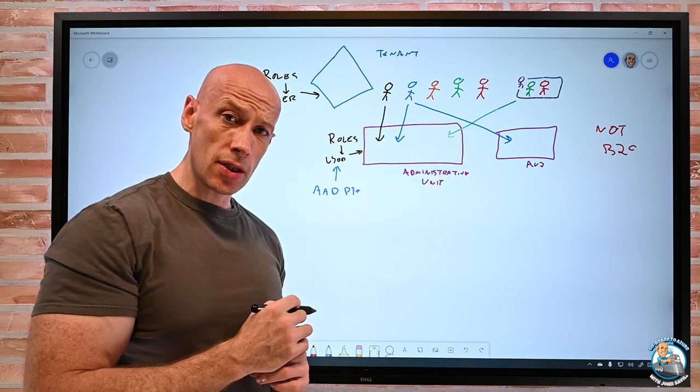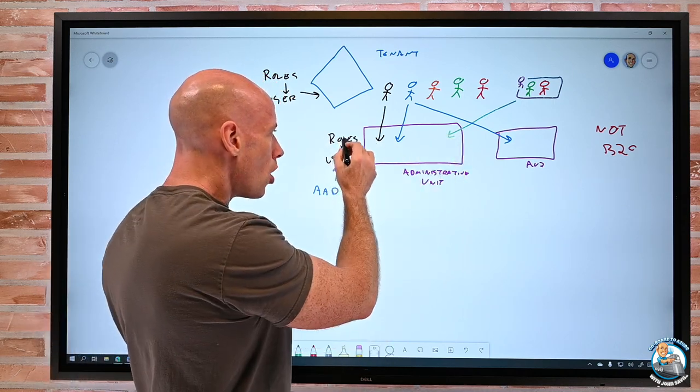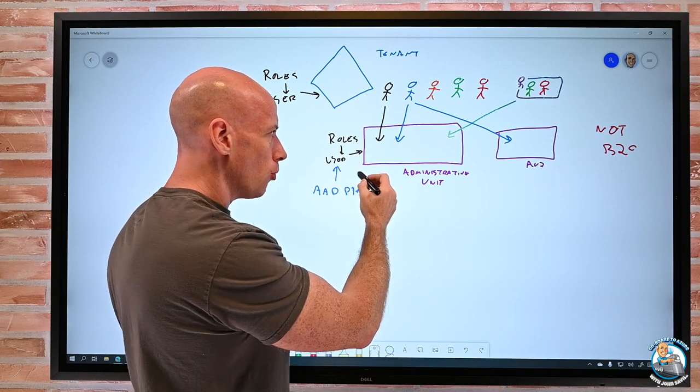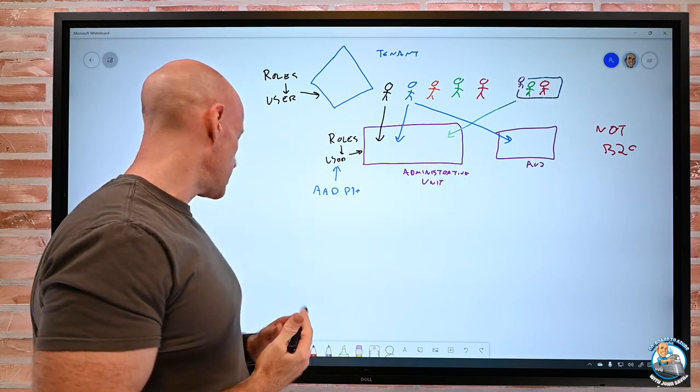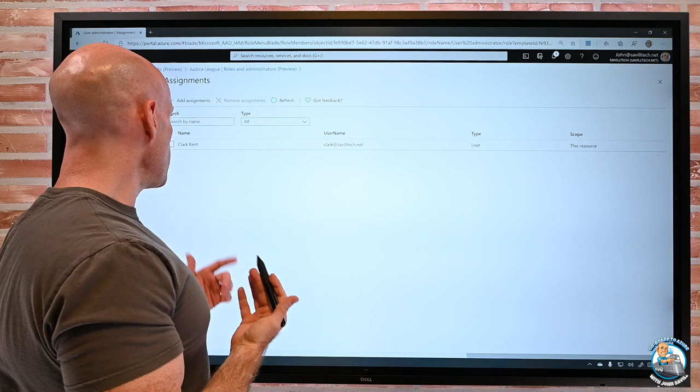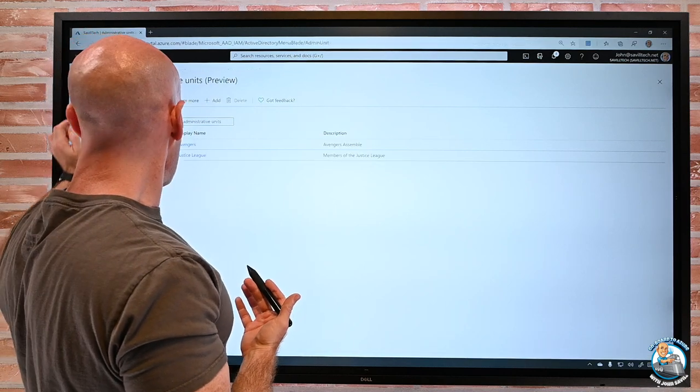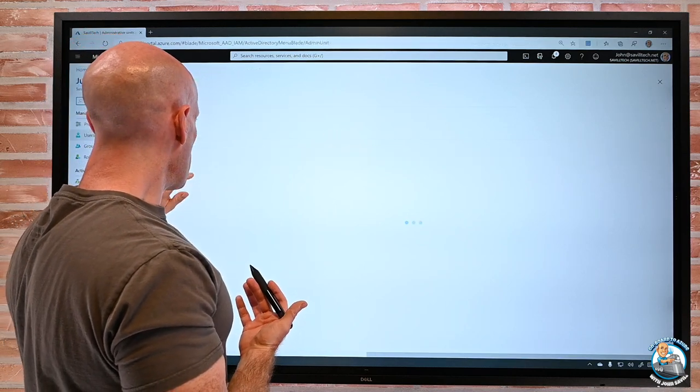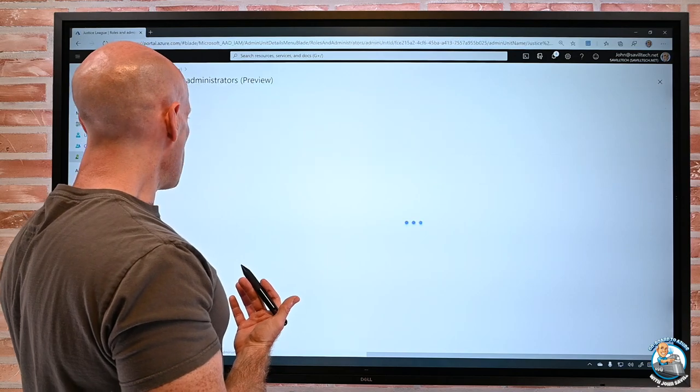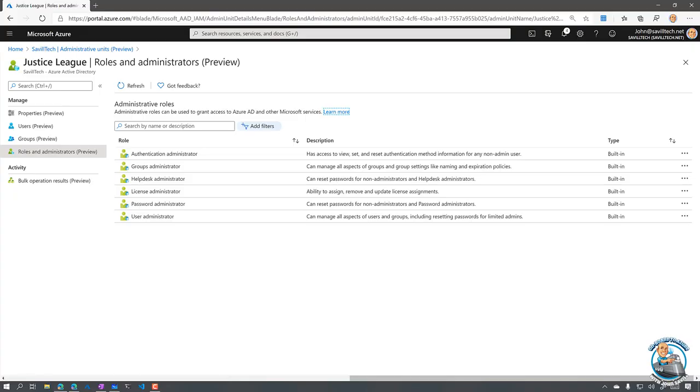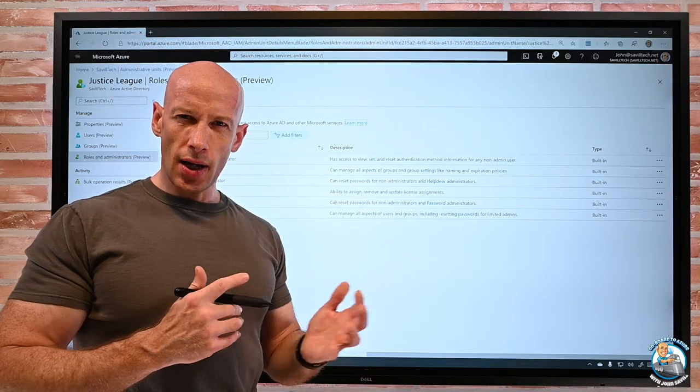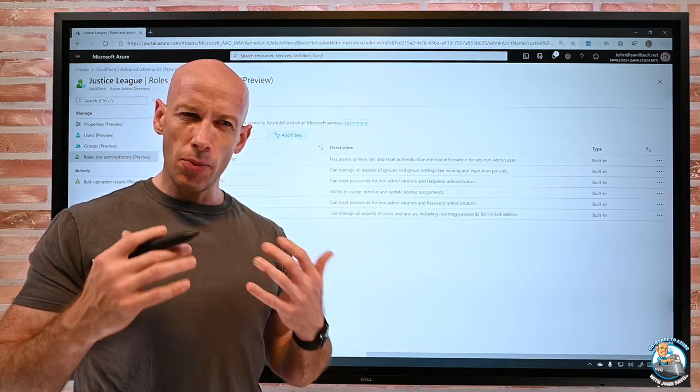I can add people into the unit. And then I can grant those roles to certain people to give them a very granular set of control. The permissions available, again, if we jump out, I can go and look at one of these and I can actually see the roles. So, there's things like authentication administrator, groups administrator, help desk administrator, license, password, and user. And then there's different sets of actions. I can pick the ones that make sense for me.